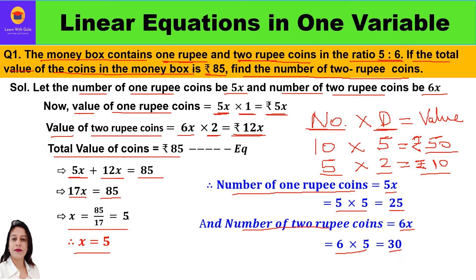The number of 2 rupee coins is 6x, so 6 into 5, which is 30. The question asked only to find the number of 2 rupee coins, so the number of 2 rupee coins is 30. This is how we solved the first question.